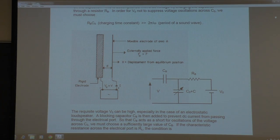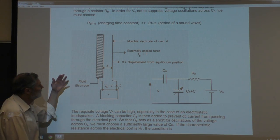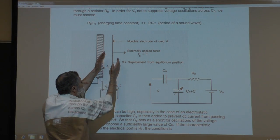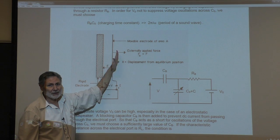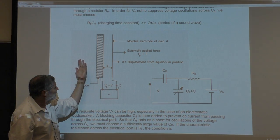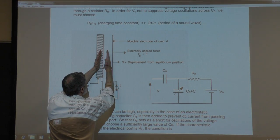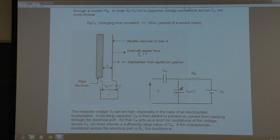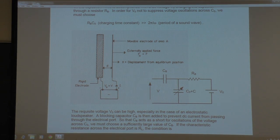For the electrostatic loudspeaker: if you oscillate the voltage, you move this movable diaphragm or plate and it sends out sound. If a sound wave comes in, the wave causes this to flex and you'll see a varying voltage across it. So qualitatively it's simple — mathematically is another matter.